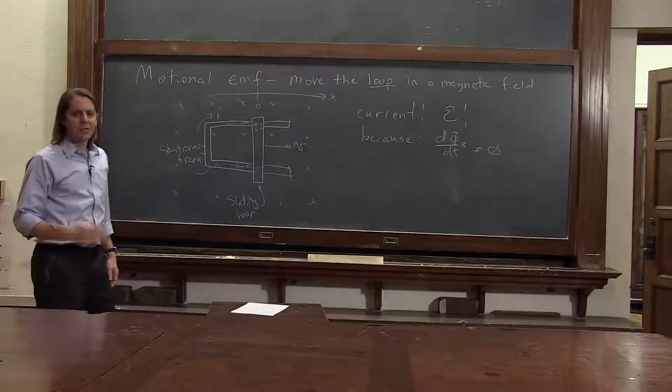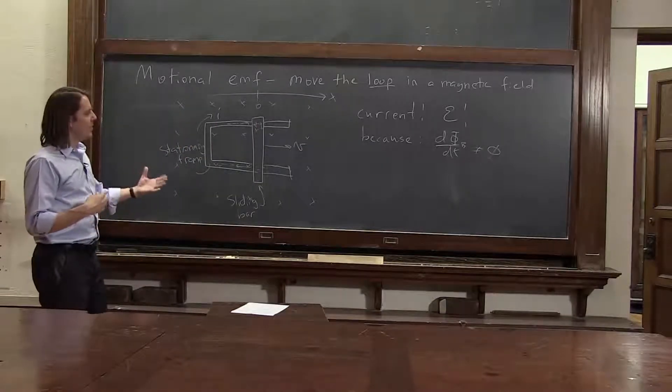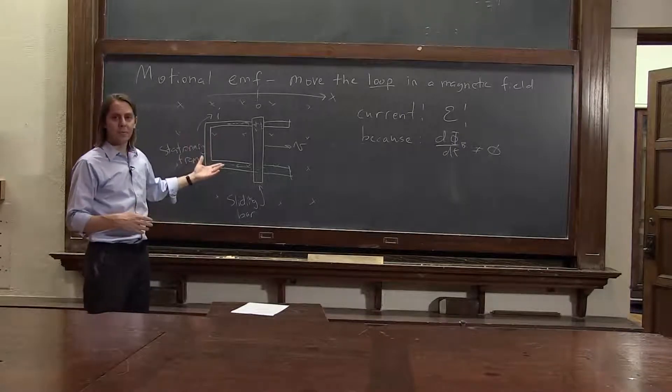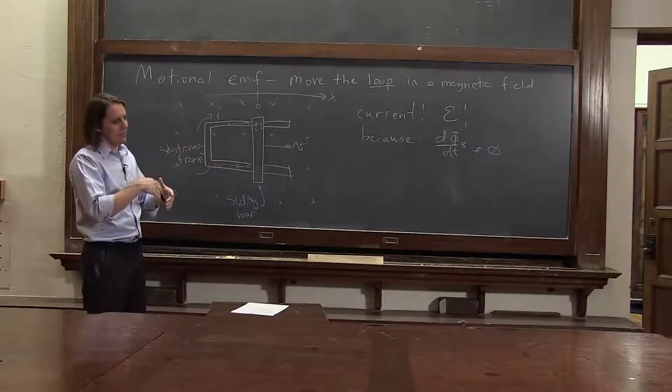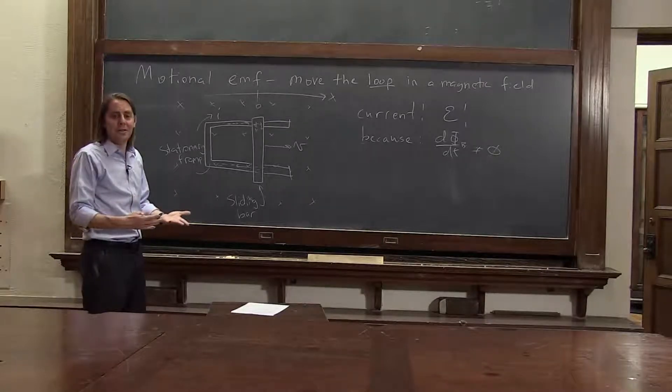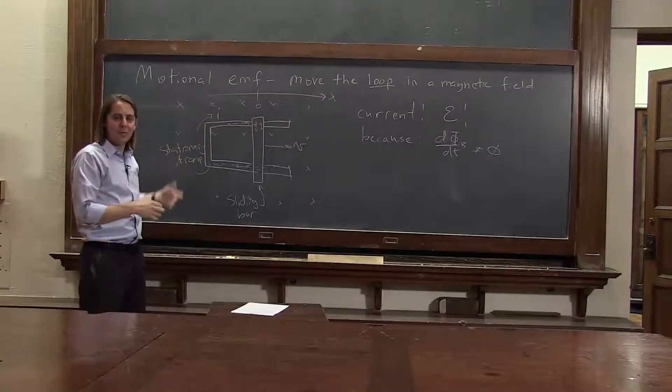So with motional EMF, sometimes you can actually analyze it and see it just with the Lorentz force. It doesn't mean that you don't need Faraday's law. It doesn't exist. It just means Faraday's law always works out. And if it's motional, you can get it from the Lorentz force, OK?